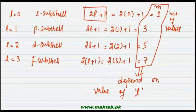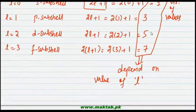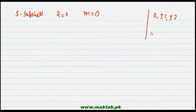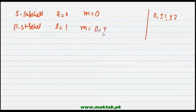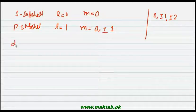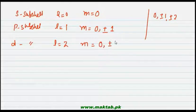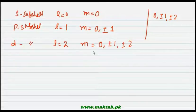When l = 1, m gives 3 values: 0, +1, and −1. For d subshell where l = 2, m gives 5 values: 0, +1, −1, +2, and −2. So for p subshell the three values are 0, +1, and −1, and for d subshell the five values are 0, ±1, and ±2.